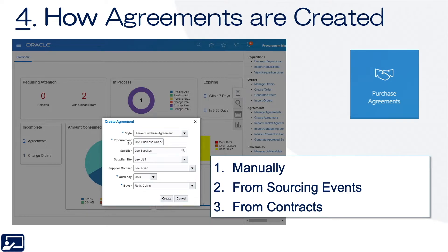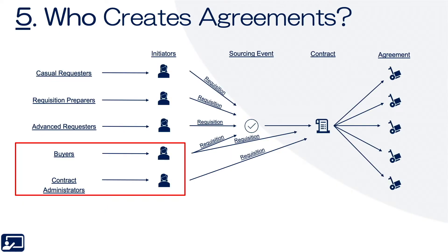Fourth topic: how are agreements created? Largely they're either created manually, or they can be created out of sourcing events, from contracts, or contract clients. Fifth topic: who creates those agreements? That depends a little bit on where they get created from, but largely it could be requesters, buyers, or contract administrators. You can see the pathway: they initiate through a REC, then go to a sourcing event or straight to a contract, with that line going out to an agreement. The sourcing event can also go to an agreement.